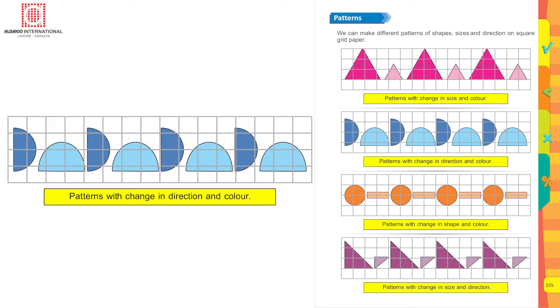Coming to the next picture, these are patterns with change in direction and color. Now the direction of the semicircle is different in the first one, and in the second picture it is the other way round, and the colors are also different.